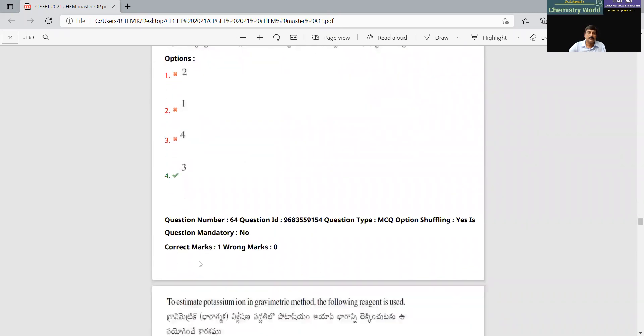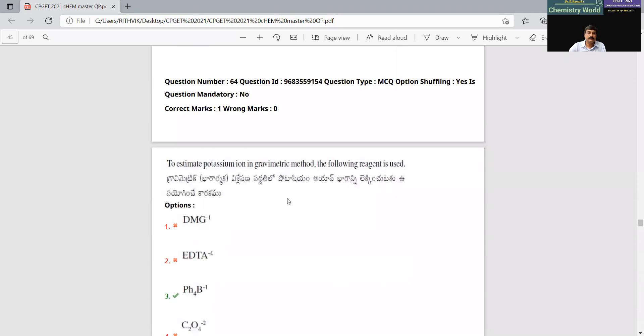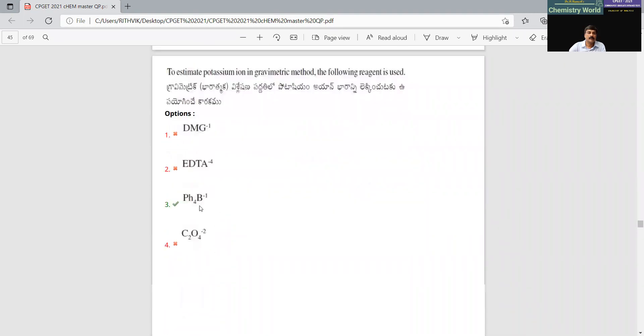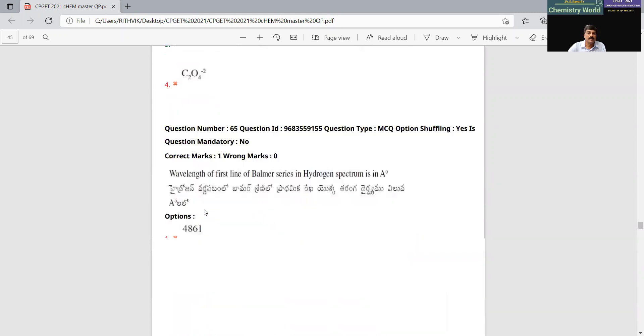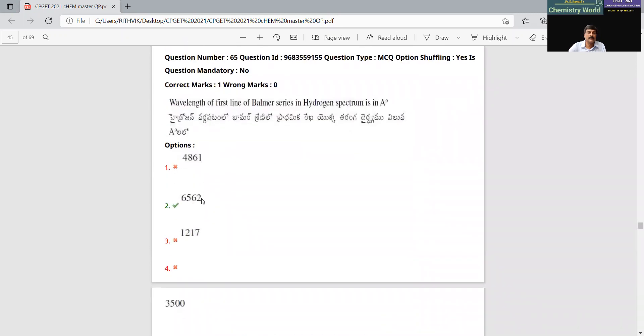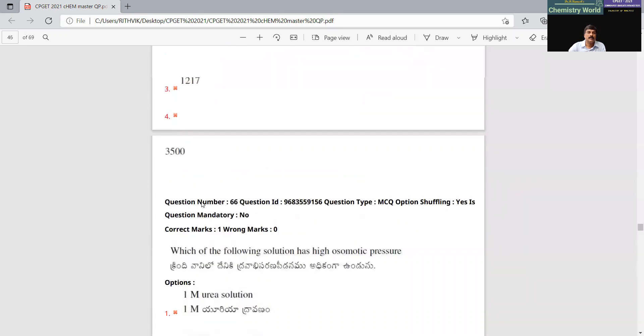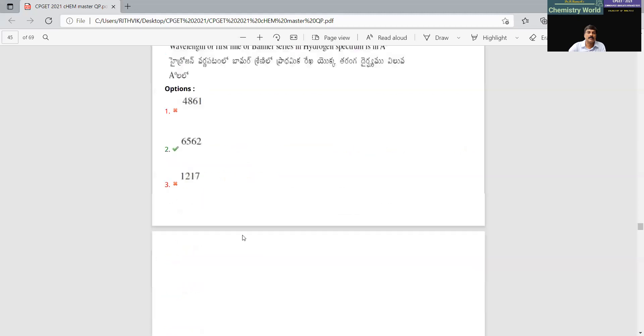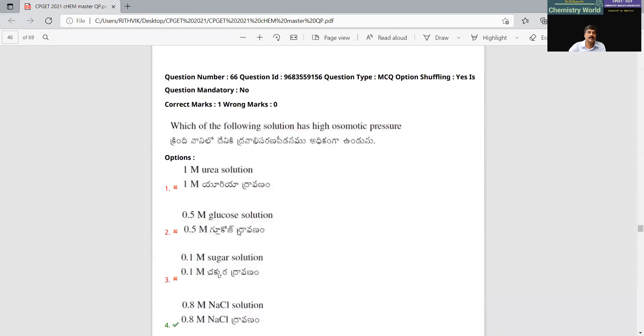Now, this is again a direct question. This is also a direct question. This is again a direct question, 656 nanometers, 6562 angstroms, 652 nanometers.